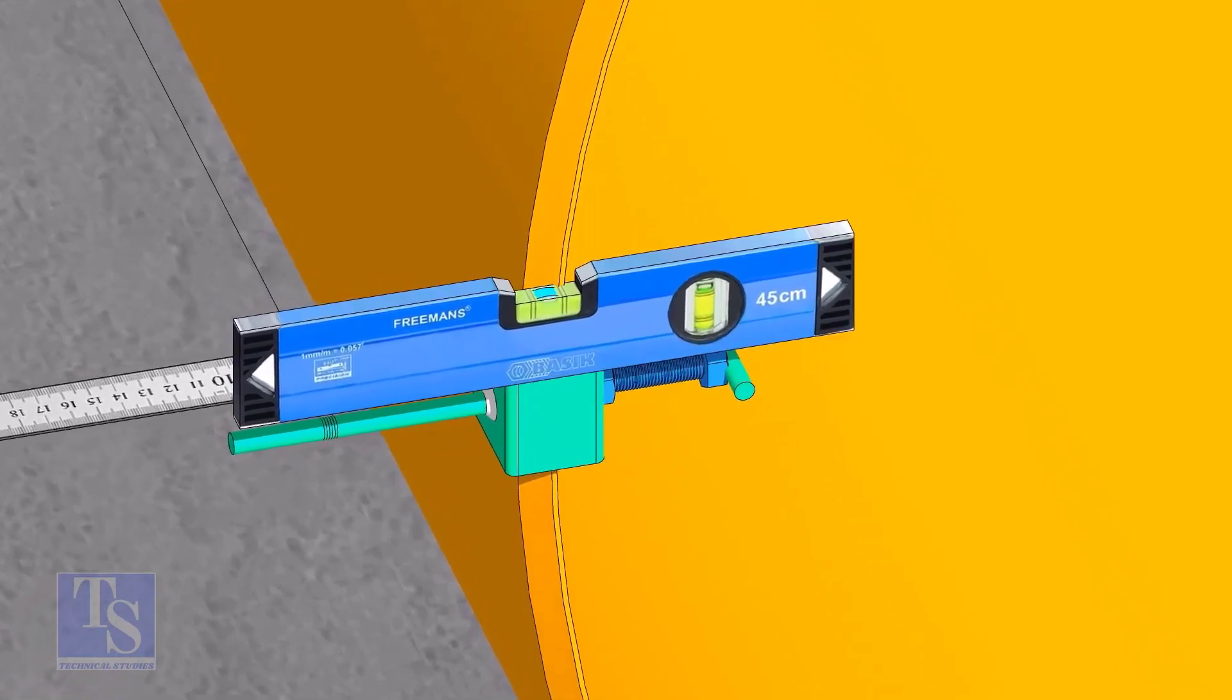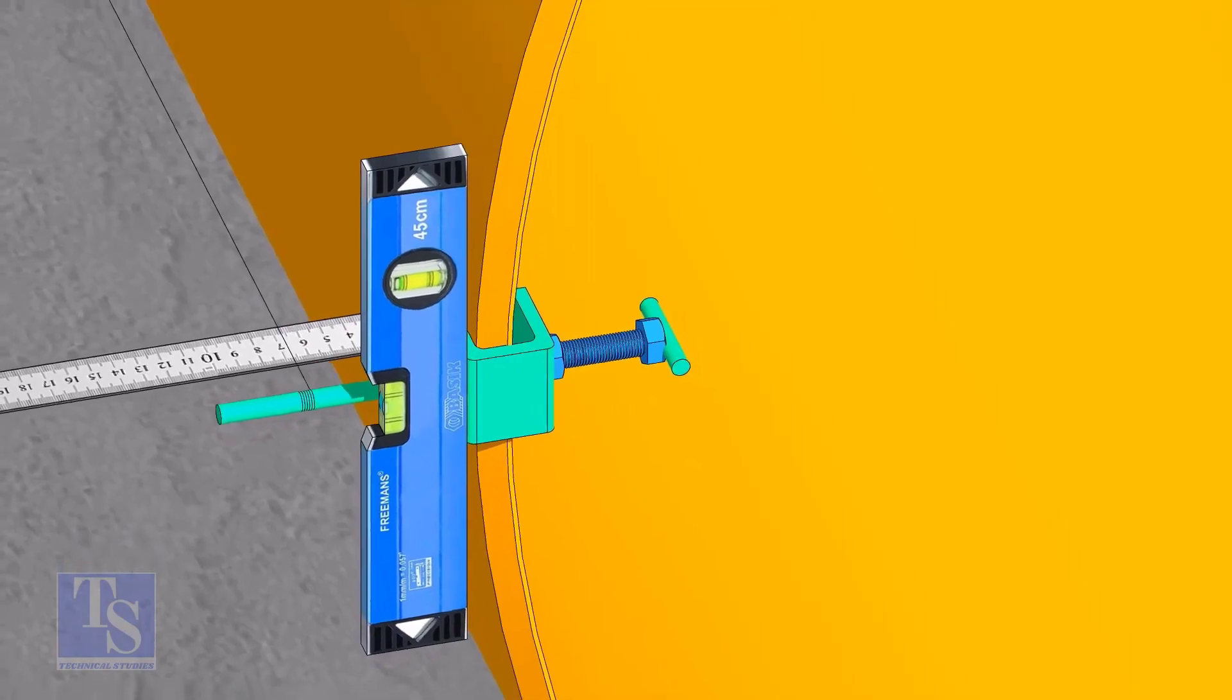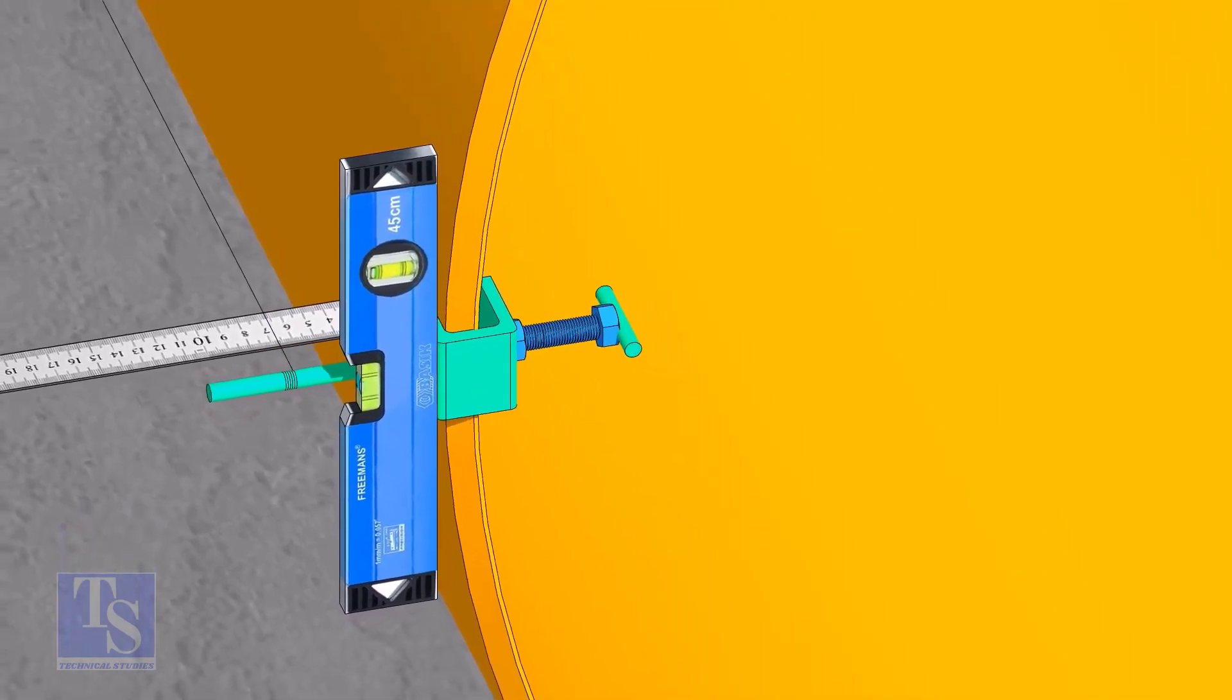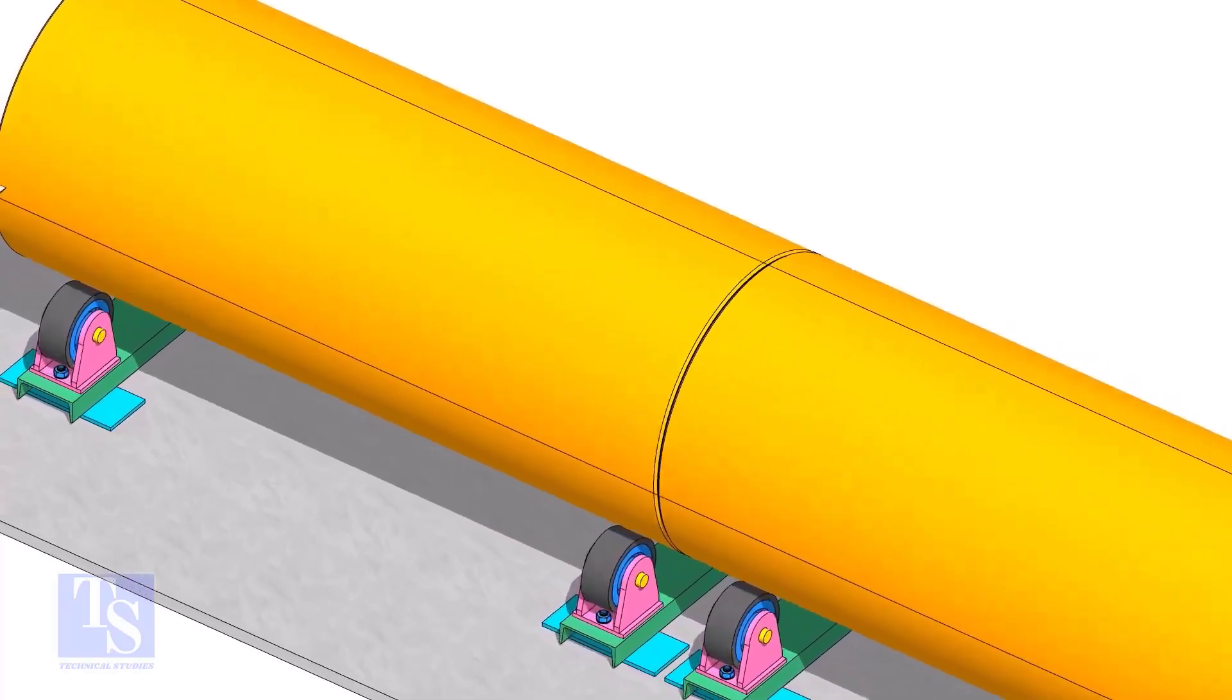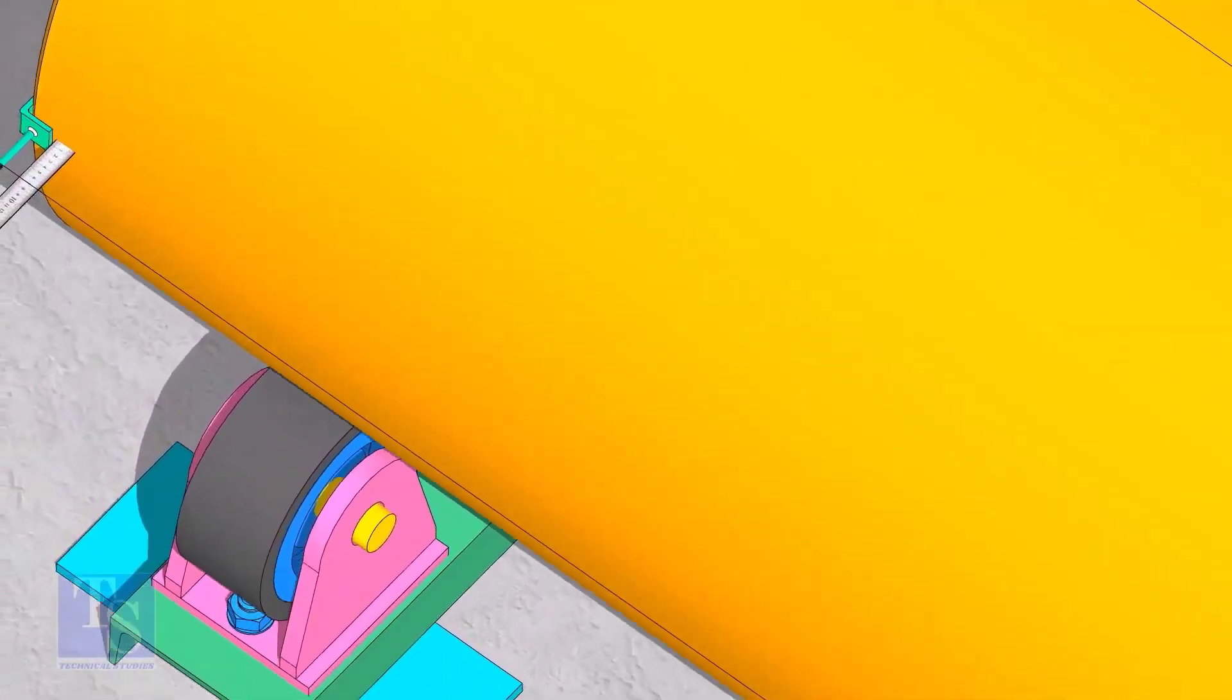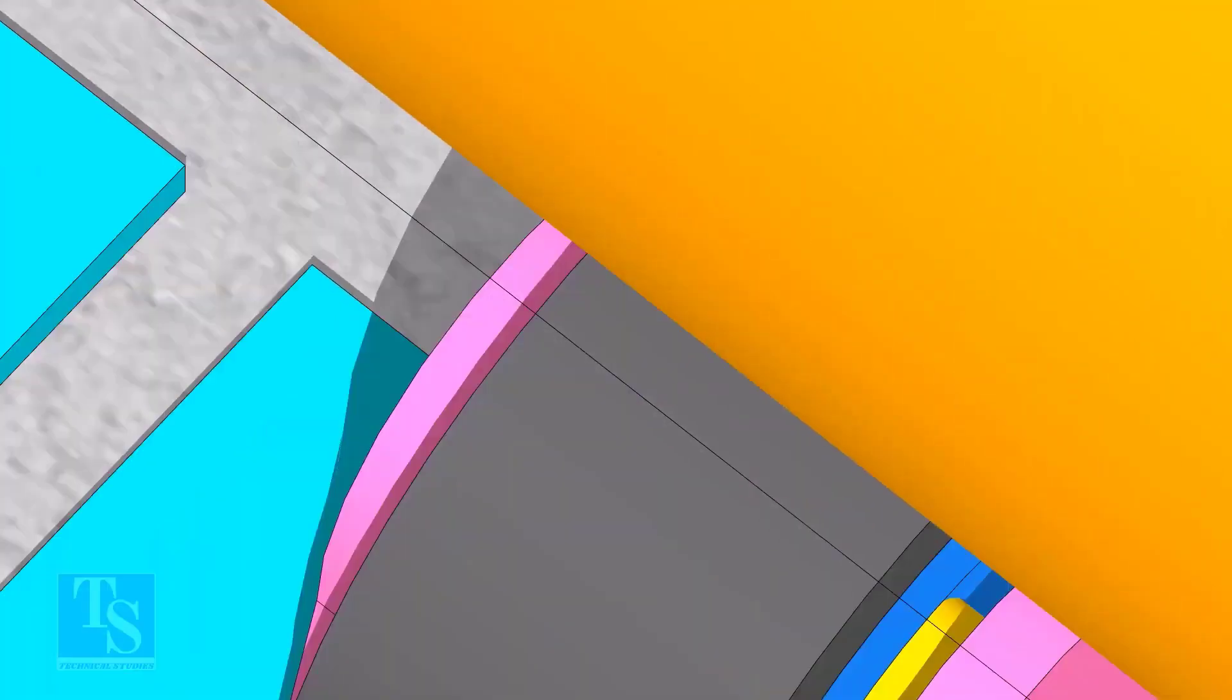As you put the clamps roughly 90 degrees apart, make sure the clamps are level. Tie the piano wire tightly on these clamps. Make sure the distance between the shell to the piano wire is equal at both ends.